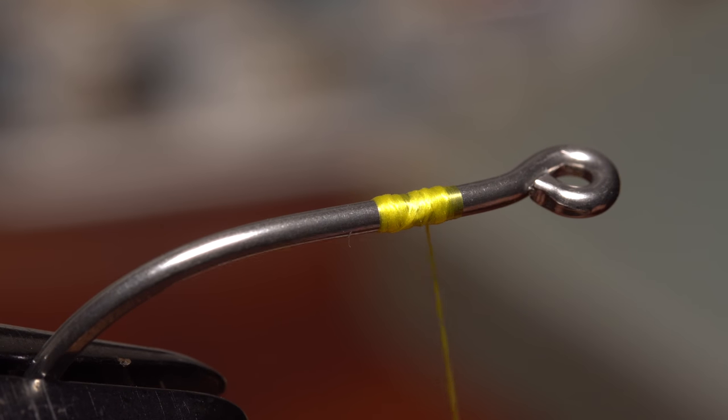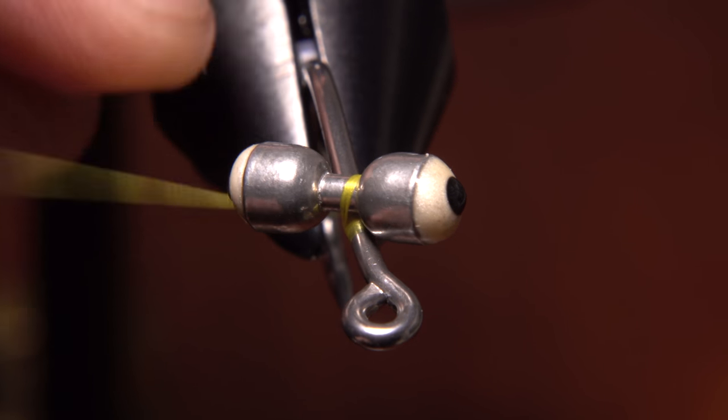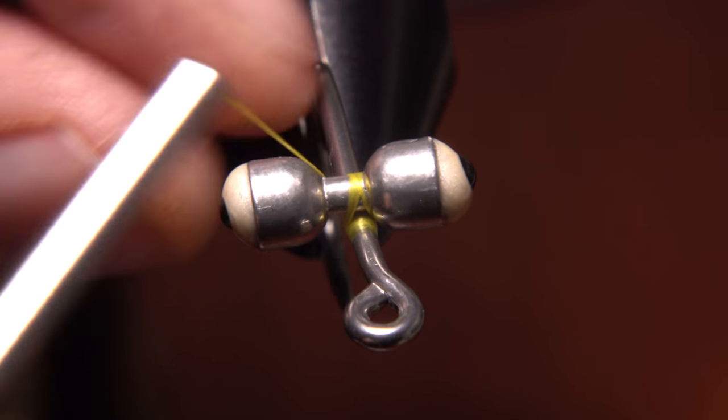Begin by getting your threads started on the hook shank in the appropriate location. Place the eyes diagonally on top of the shank and take a couple of cross wraps both ways to lightly secure them.